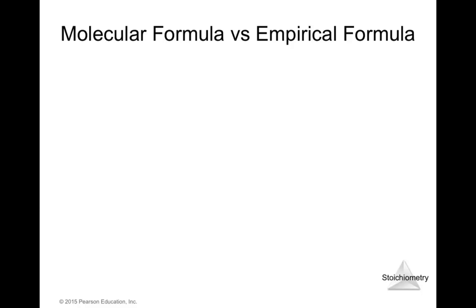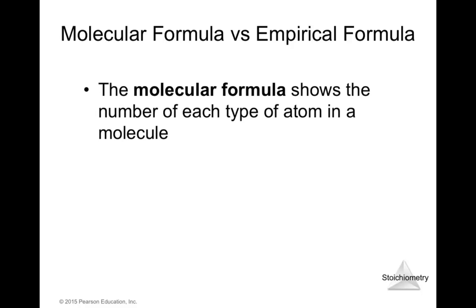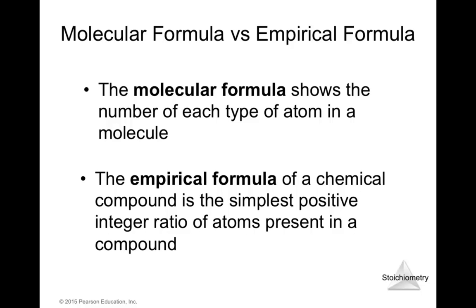The molecular formula shows the number of each type of atom in a molecule, while the empirical formula is the simplest positive integer ratio of atoms present. Sometimes the molecular formula and empirical formula are the same — for example, H2O — because the ratio 2:1 cannot be reduced further. The subscripts in an empirical formula must always be integers, not decimals or fractions.